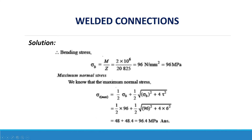For maximum normal stress: σ_max = (1/2)σ_b + (1/2)√(σ_b² + 4τ²) = (1/2)(96) + (1/2)√(96² + 4 × 6²) = 48 + 48.4 = 96.4 MPa. This is the maximum normal stress.